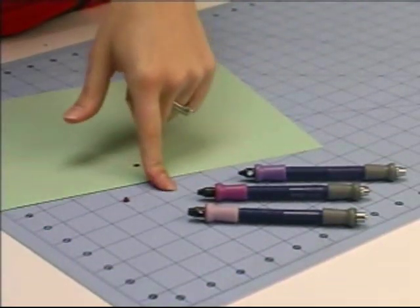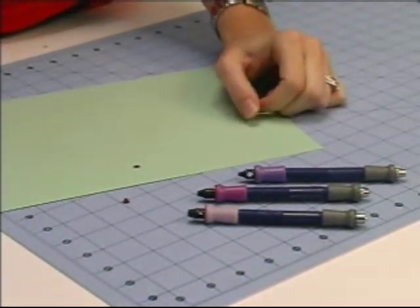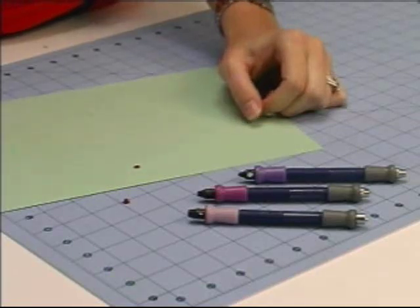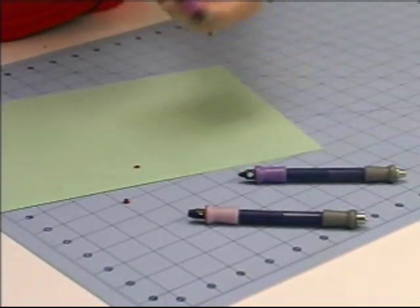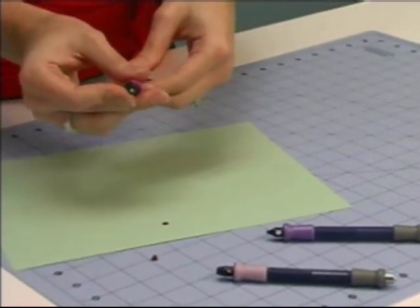First, you'll notice that the eyelet setters come in three different sizes, allowing you to set three different sizes of eyelets. To get started, you're going to select the size that you need, and we're going to first set the hole.